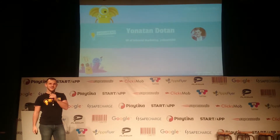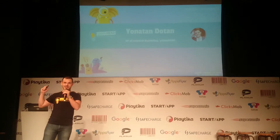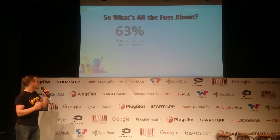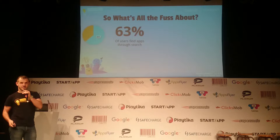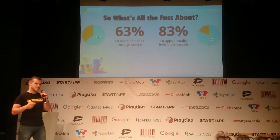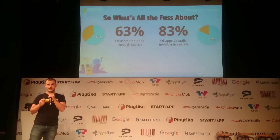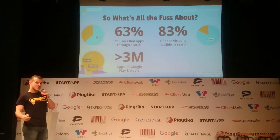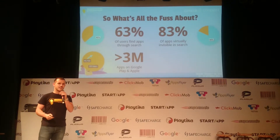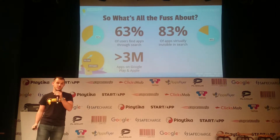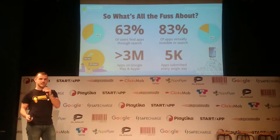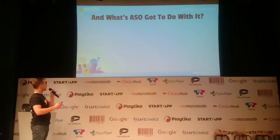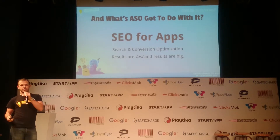There's a lot in this presentation, so I'm going to go relatively quickly. For those who aren't believers yet, here's what the fuss is about: 63% of all users find applications through search. Despite that, 83% of all applications are virtually invisible in search — they cannot be found in keyword or category rankings unless you're searching directly for them. There are over 3 million applications on Google Play and iOS alone, with something like 5,000 new applications being submitted every single day. So what does ASO have to do with it? In a sense, ASO is SEO for applications.